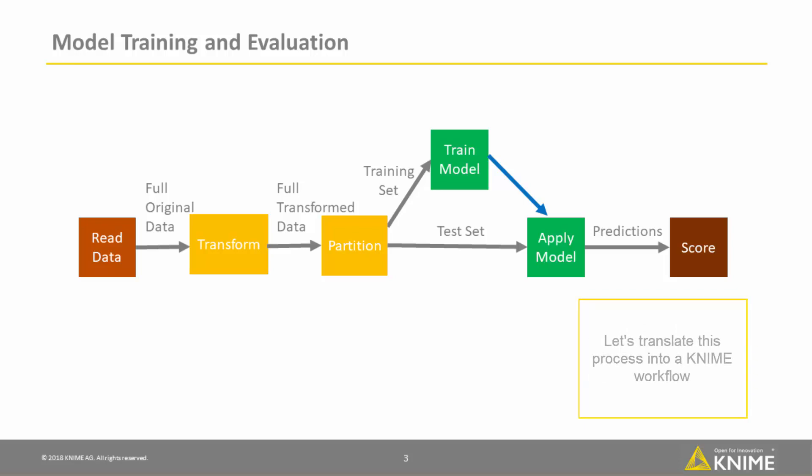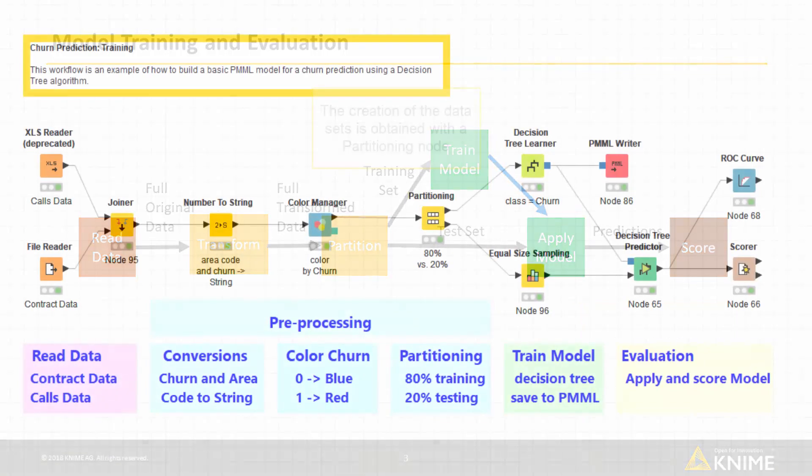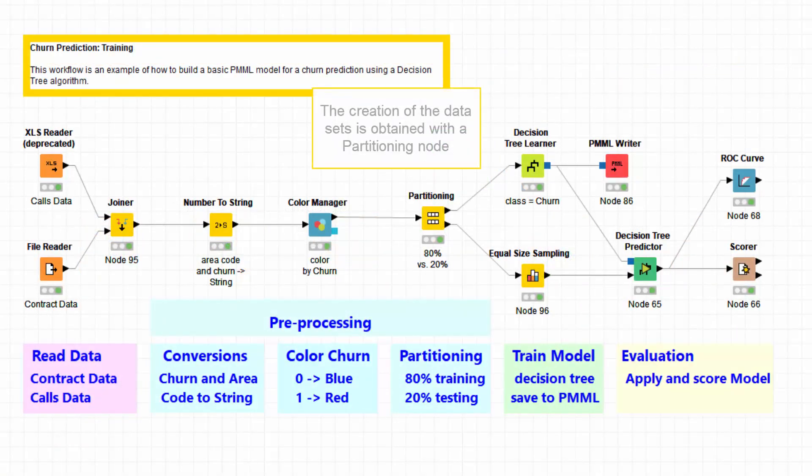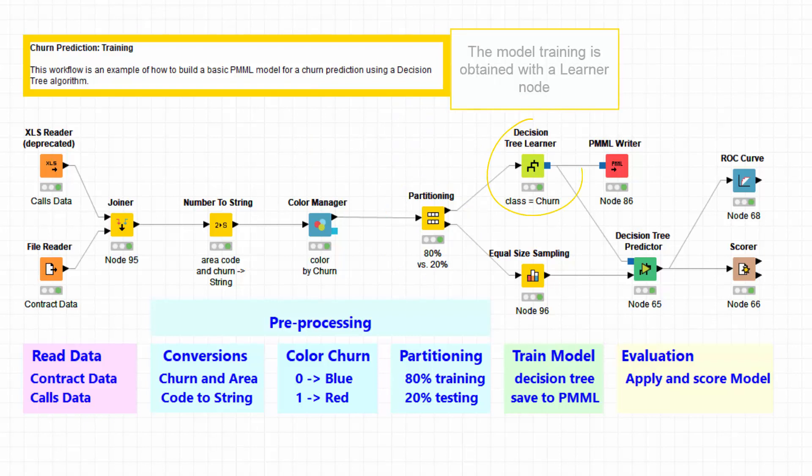Let's translate this process into a KNIME workflow. The creation of the data sets is obtained with a partitioning node. The model training is obtained with a learner node, for example here a decision tree learner node.